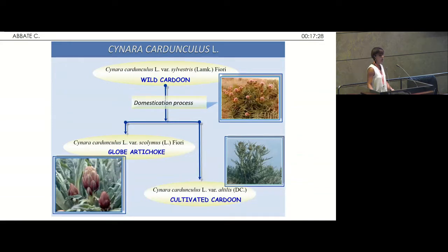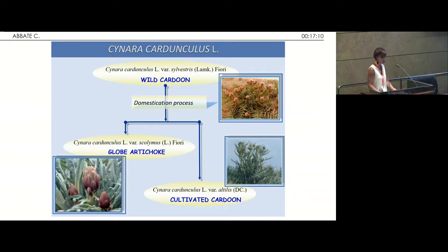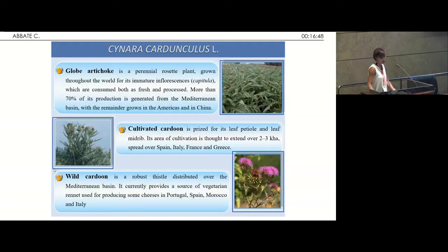We chose Cynara cardunculus because until now in the literature there are no data about its allelopathic activity. Cynara cardunculus is a very complex species, belongs to the Asteraceae family, very common in the Mediterranean basin, and it includes three botanical varieties: the globe artichoke, the cultivated cardoon, and the wild cardoon, which is the progenitor of the two domesticated products. More than 70% of globe artichoke production is from the Mediterranean basin, with the rest in the Americas and China. The main production of cultivated and wild cardoon is also around the Mediterranean basin in Spain, Italy, France, and so on.